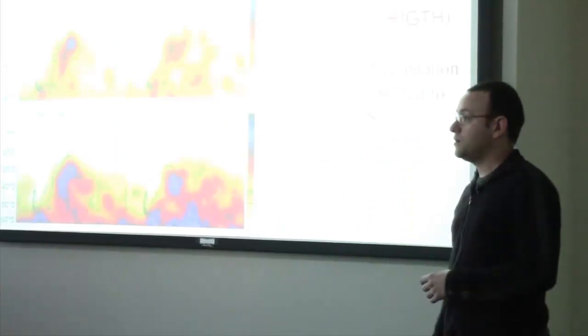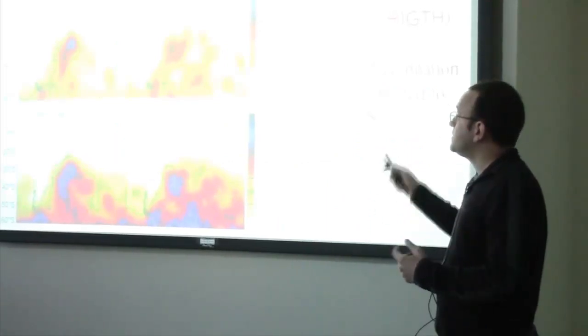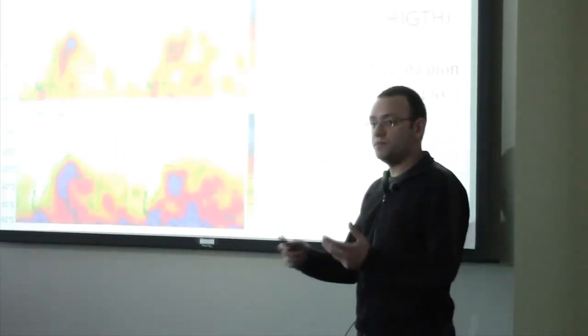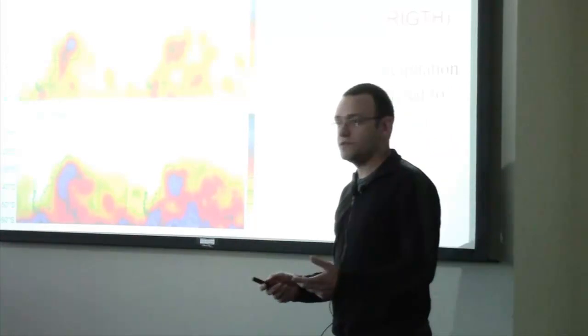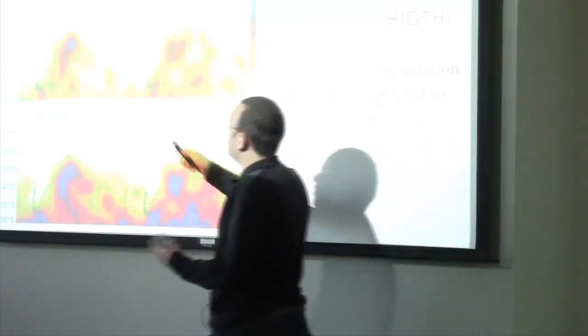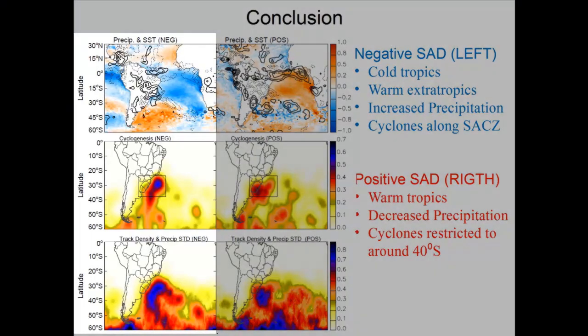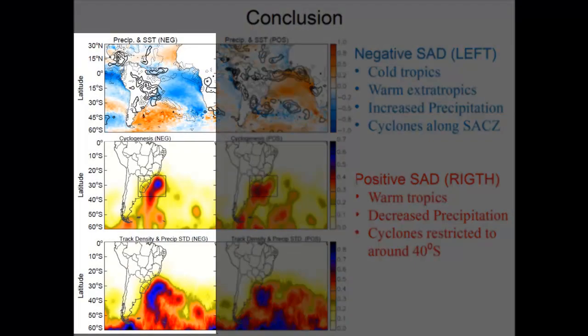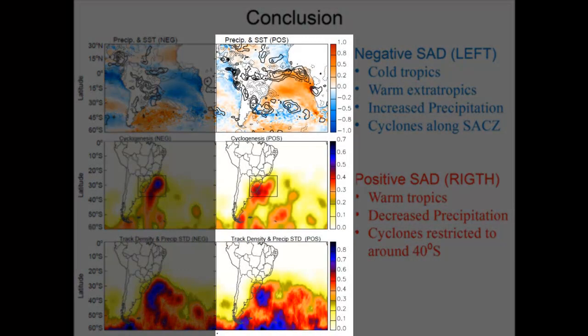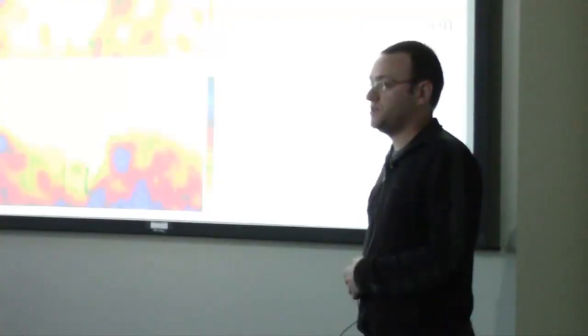Our conclusions are that the SAD modulates the position of these low pressure systems. In one phase, they form further north or reach further north and move along the SACZ region, therefore increasing precipitation. In the other phase, they are much more confined to higher latitudes, so they don't bring as much precipitation. Thank you.